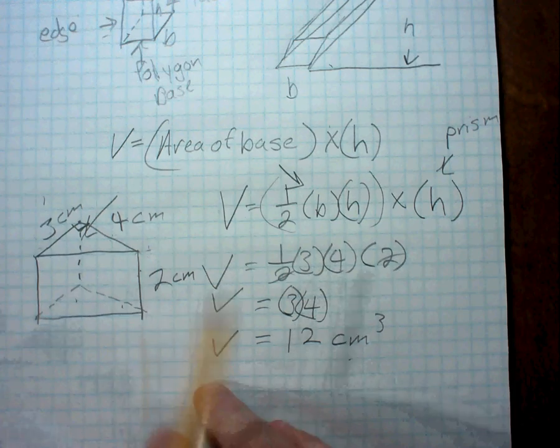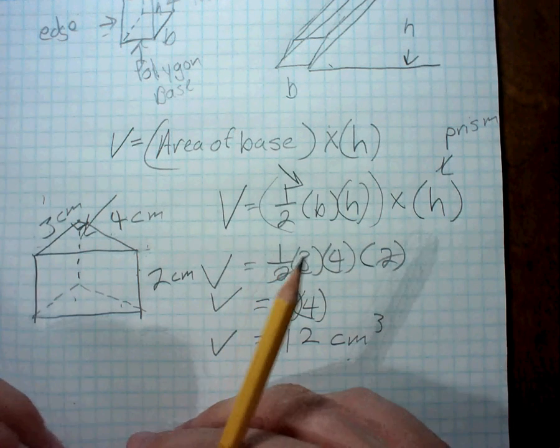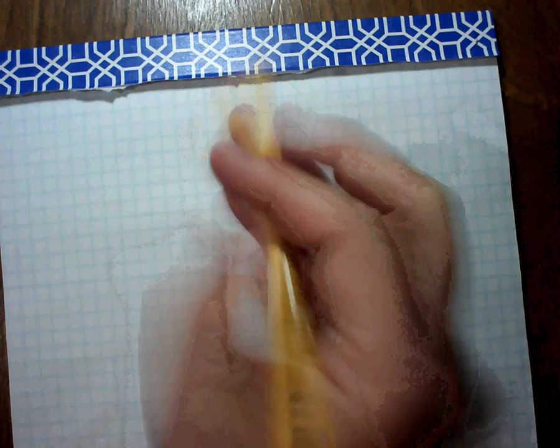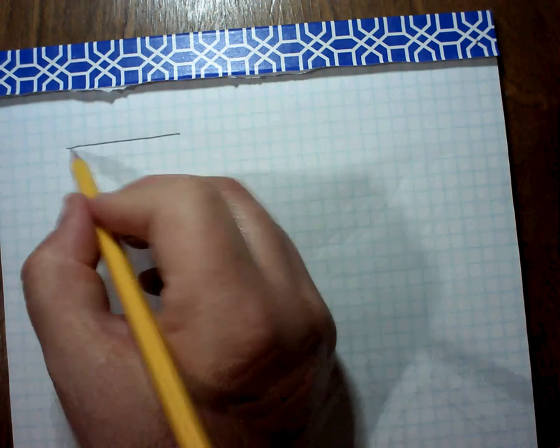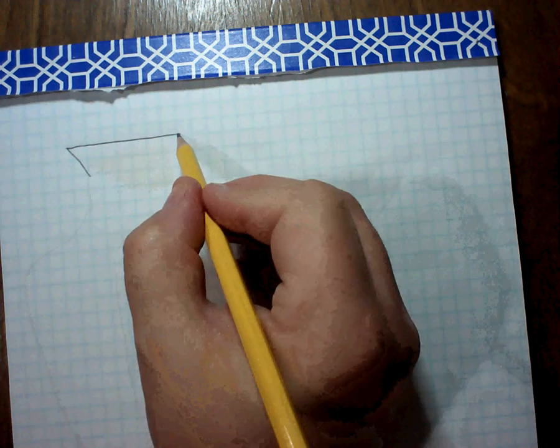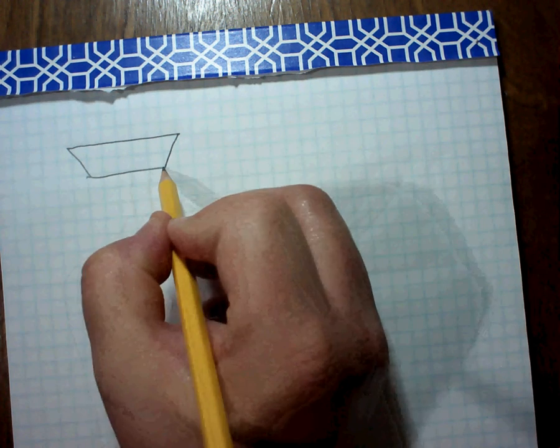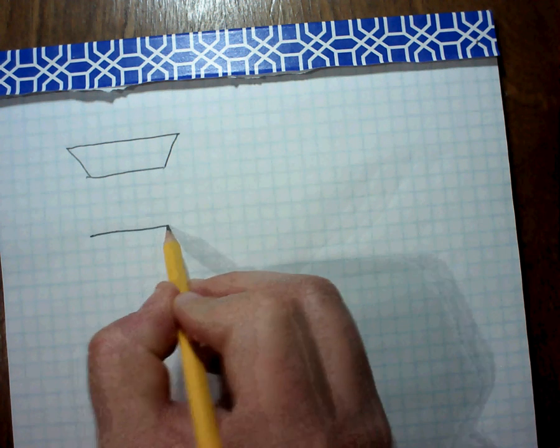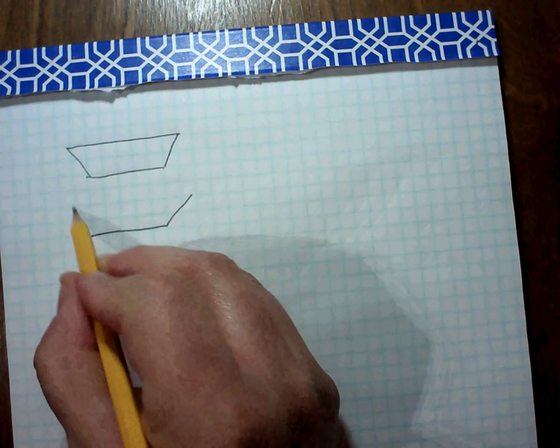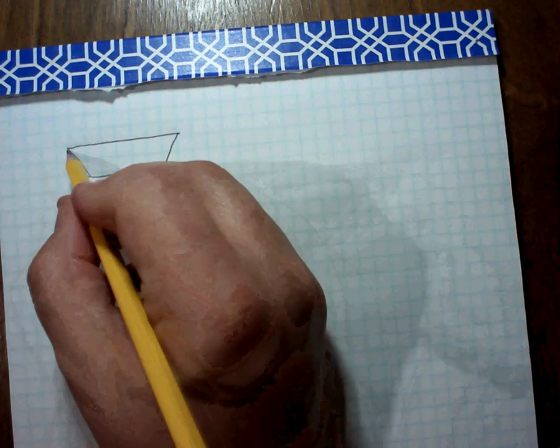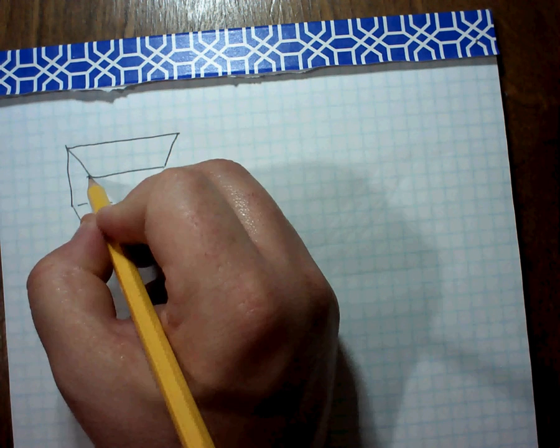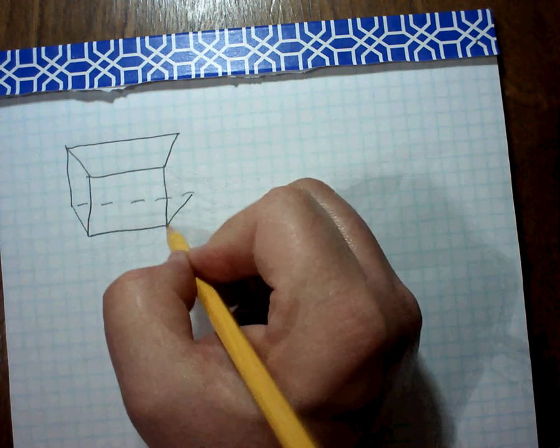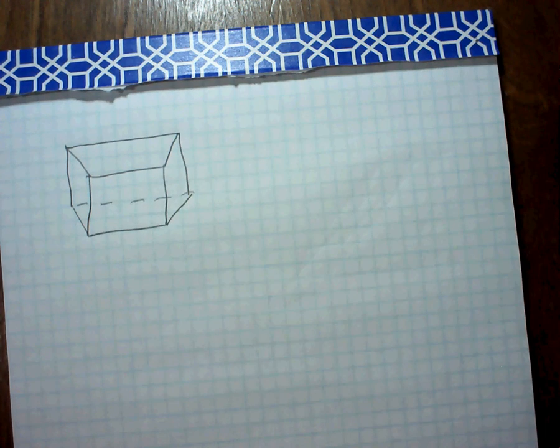Let's do one more example, though, so that way you guys can see it really is the area of the base. So we're going to do another example where the base is a different type of shape. So we've got an image like this. And so this is a trapezoid. And it's not necessarily going to be drawn to scale because I'm just kind of freehanding it here. So this is a trapezoid base. Let me draw it a little better.